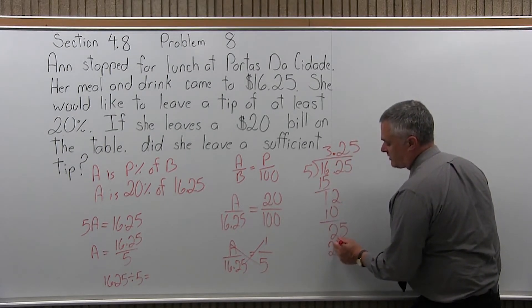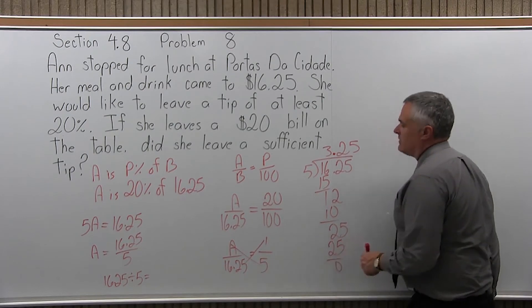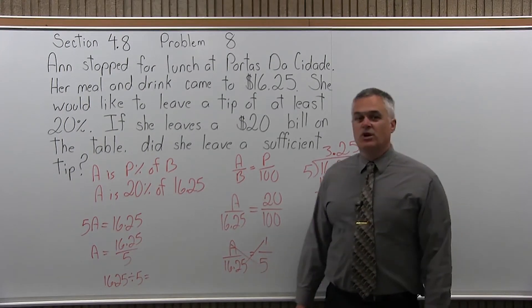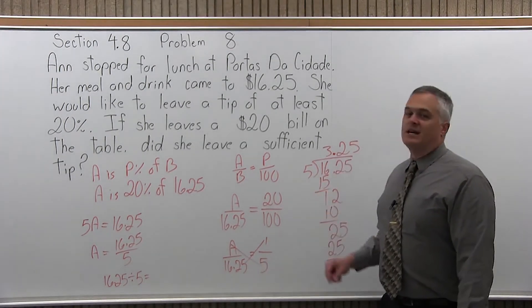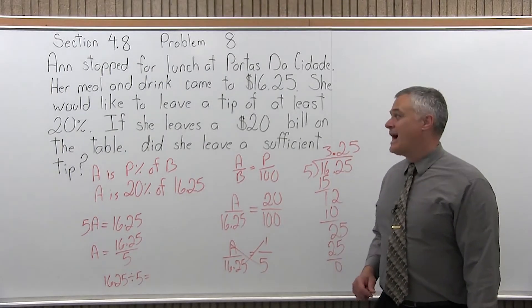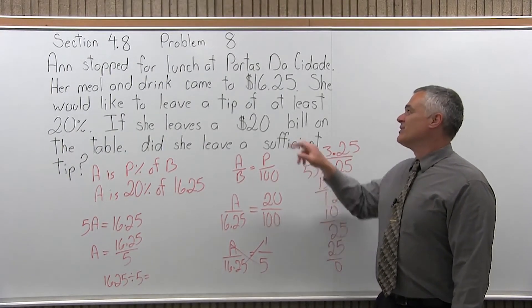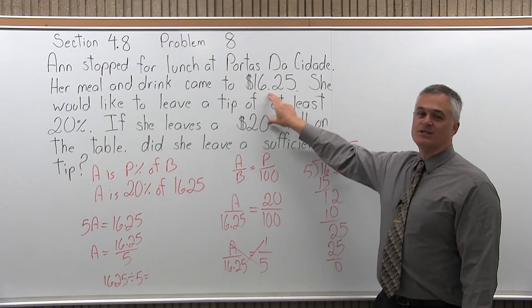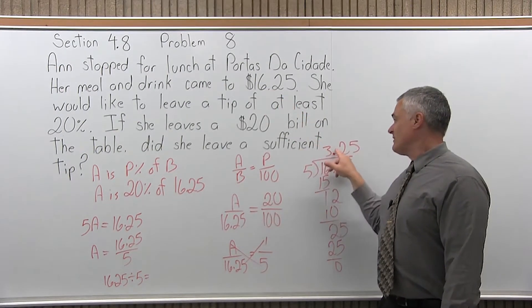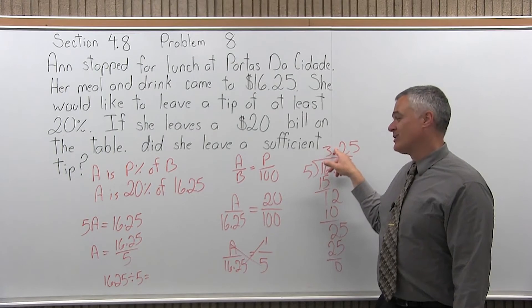giving you a 25. 5 divides into 25 exactly 5 times. 5 times 5 is 25, you get a remainder of 0, so great. So, if you leave a tip of $3.25, that's a 20% tip. Now, the question is, if the bill came to $16.25 and you leave a 20, did you give at least $3.25?